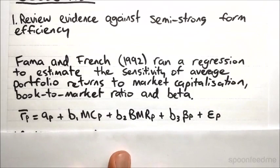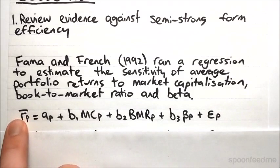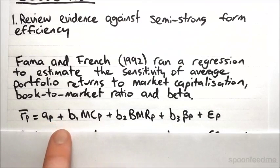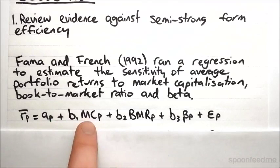So we can show the equation like this. We say that the average return on the portfolio is equal to just some constant A, plus the sensitivity to the market capitalization times the market capitalization, plus so on and so forth. And then you've got an error term at the...